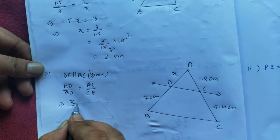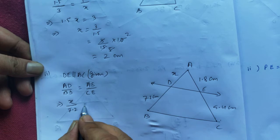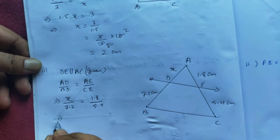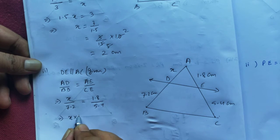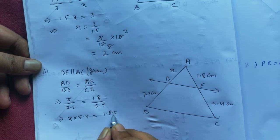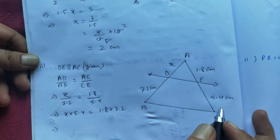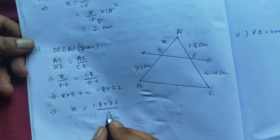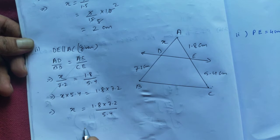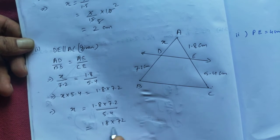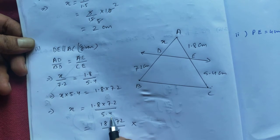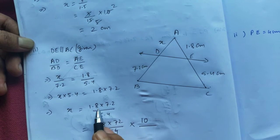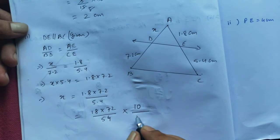Since DE is parallel to BC, we can write the ratio AD/BD = AE/CE. Since AD is unknown, take it as X. Putting in the values: X/7.2 = 1.8/5.4. Cross-multiplying: X × 5.4 = 1.8 × 7.2. So X = (1.8 × 7.2) / 5.4. Remove the decimal and cancel: this becomes 18 × 72 / 54, then divide by 100.